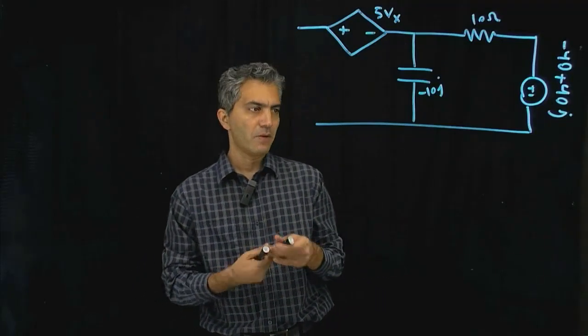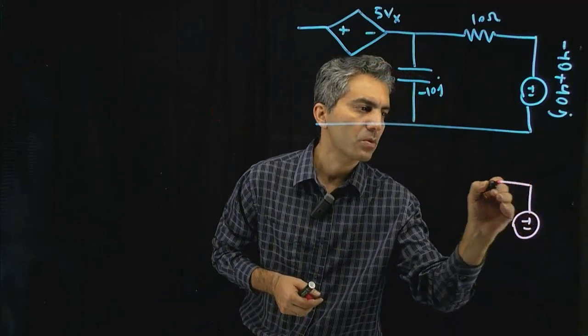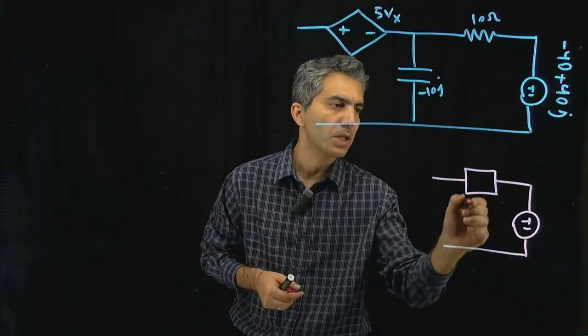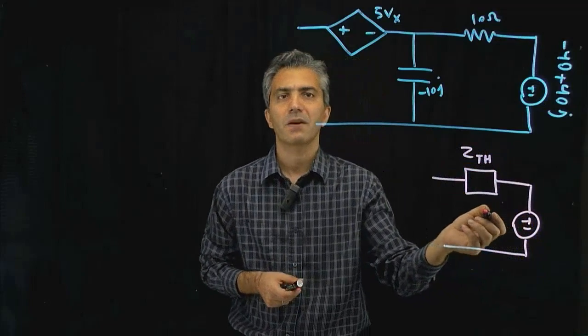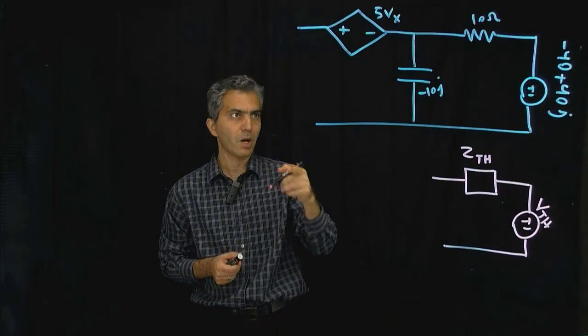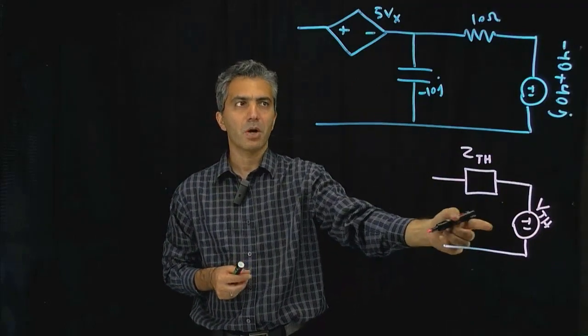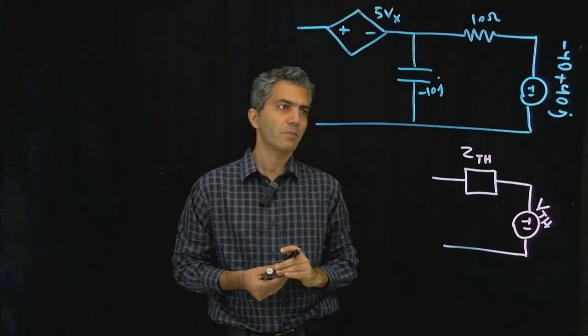Now, the Thevenin model in the phasor domain looks like this, and it's a source in series with an impedance. So this is called the Thevenin impedance, and this is called the Thevenin voltage. They're both complex numbers. Now, the process through which we can develop that model is the same as what we did for the time domain.